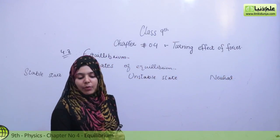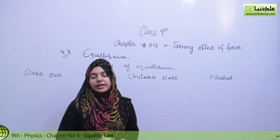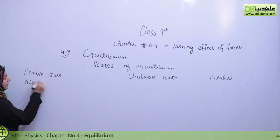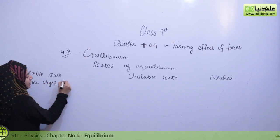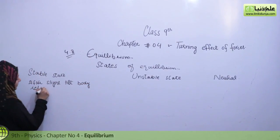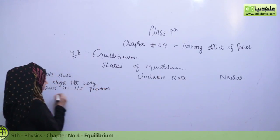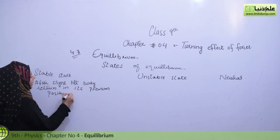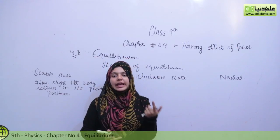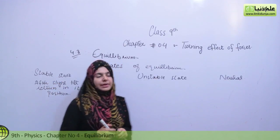Stable state means that a body is said to be in stable equilibrium if, after a slight tilt, it comes back to its previous position. When we move the body a little bit and it returns to its previous condition, then the body is said to be in stable equilibrium.